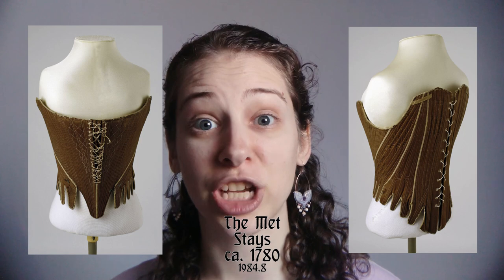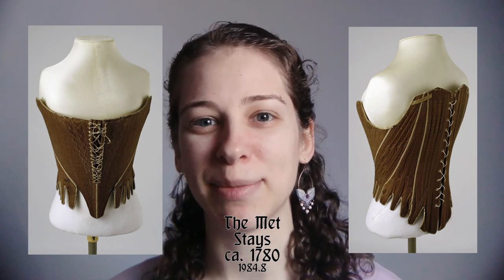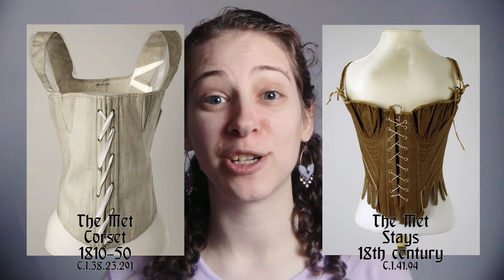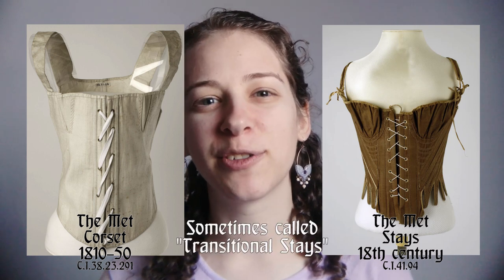In the 1780s the prow front shape became popular, meaning the bust of the stays became more prominent. Towards the end of the 1790s bust gores and gathered cups started showing up in stays, giving the torso a softer and more natural shape.